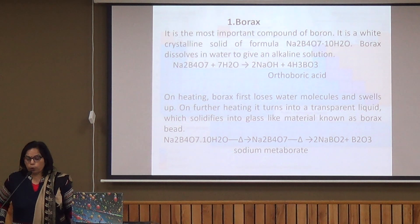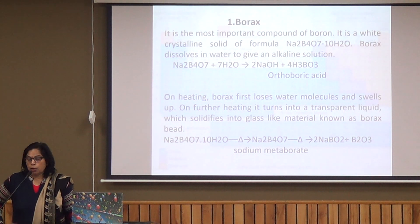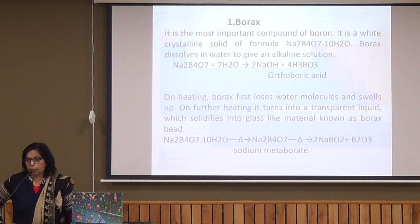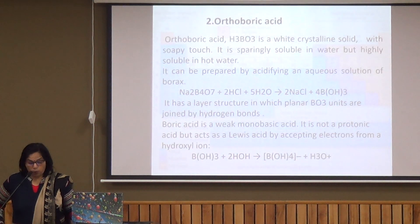Now we come to compounds of boron. The first compound is borax. Its formula is Na2B4O7·10H2O, meaning it has 10 molecules of water of crystallization. Borax is basic or alkaline in nature because it dissolves in water to form NaOH, a strong alkali. Borax is also used to detect the cation present in a salt by the borax bead test — a platinum wire is dipped in the compound and borax and then heated, giving colorful beads.